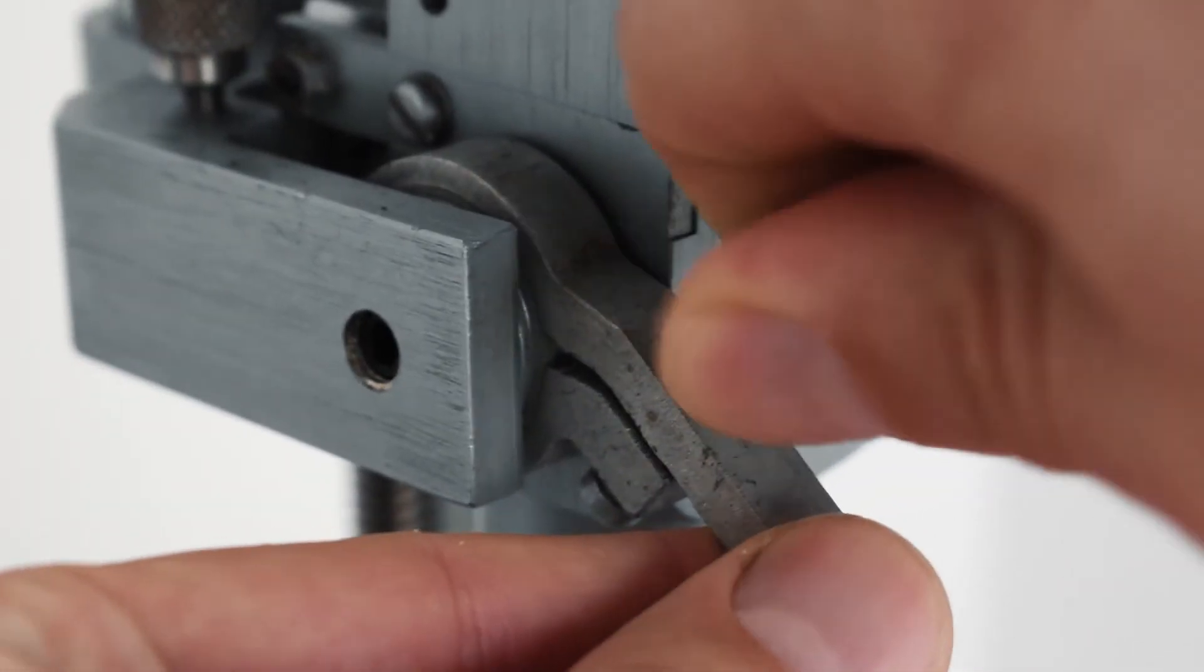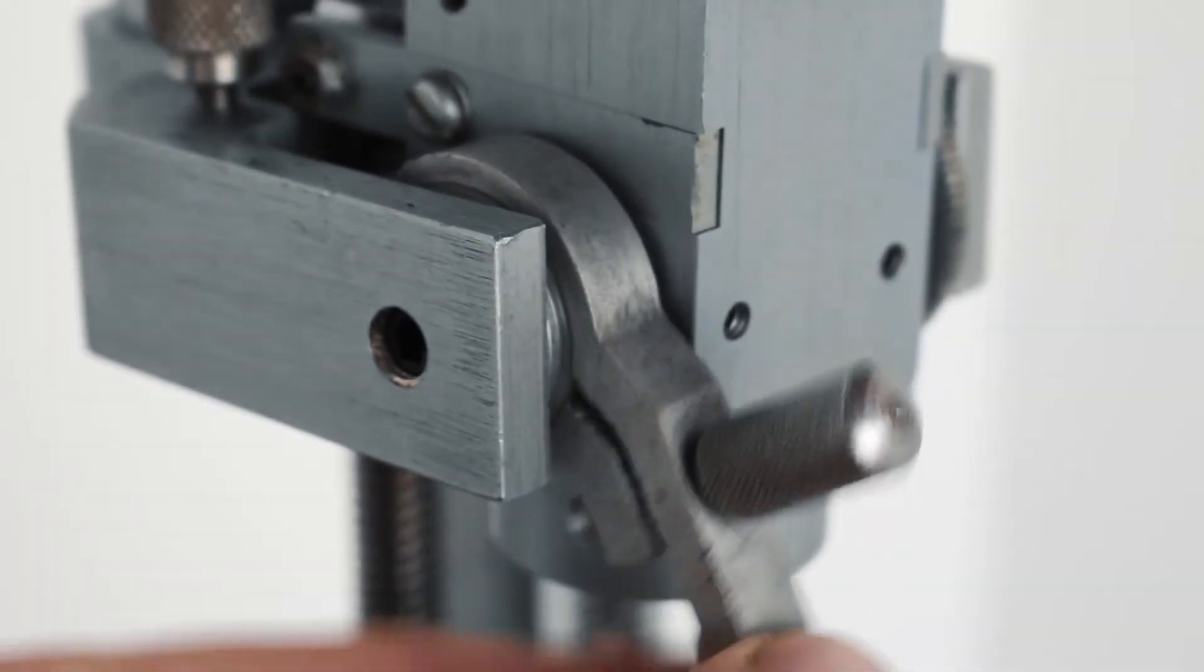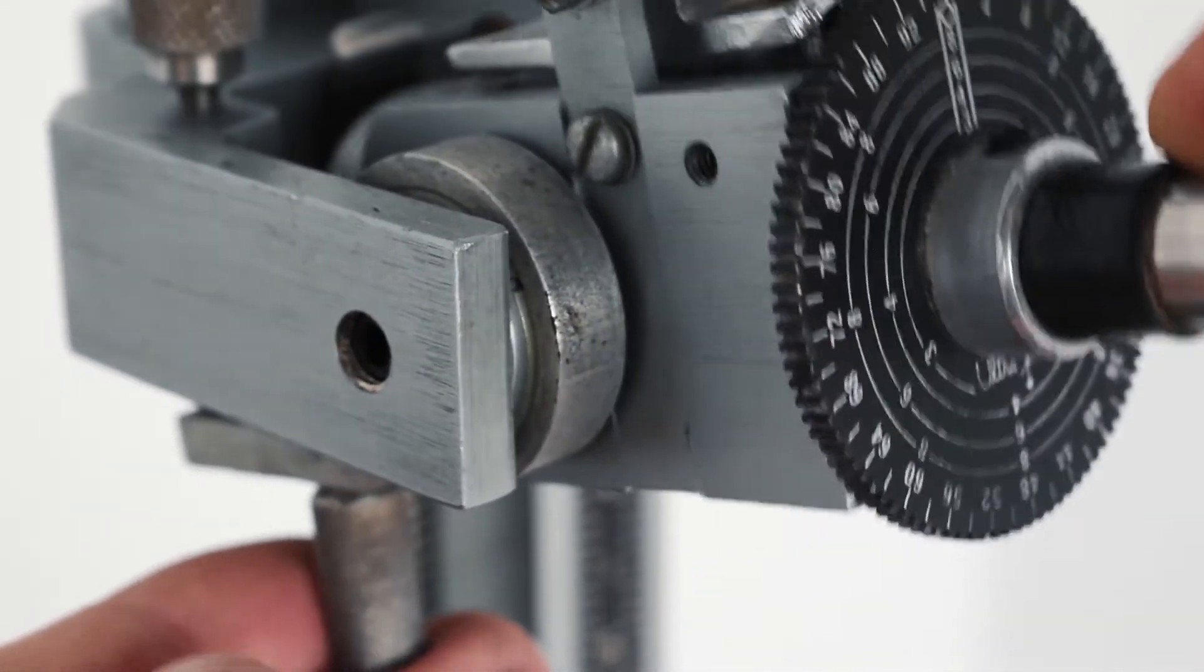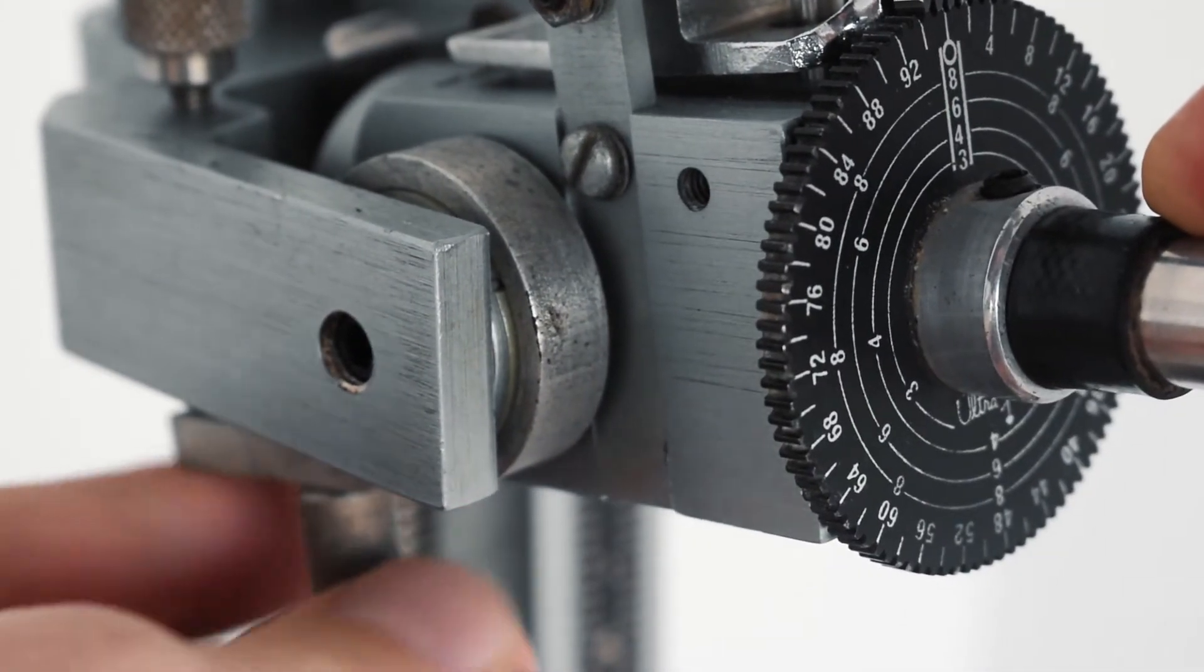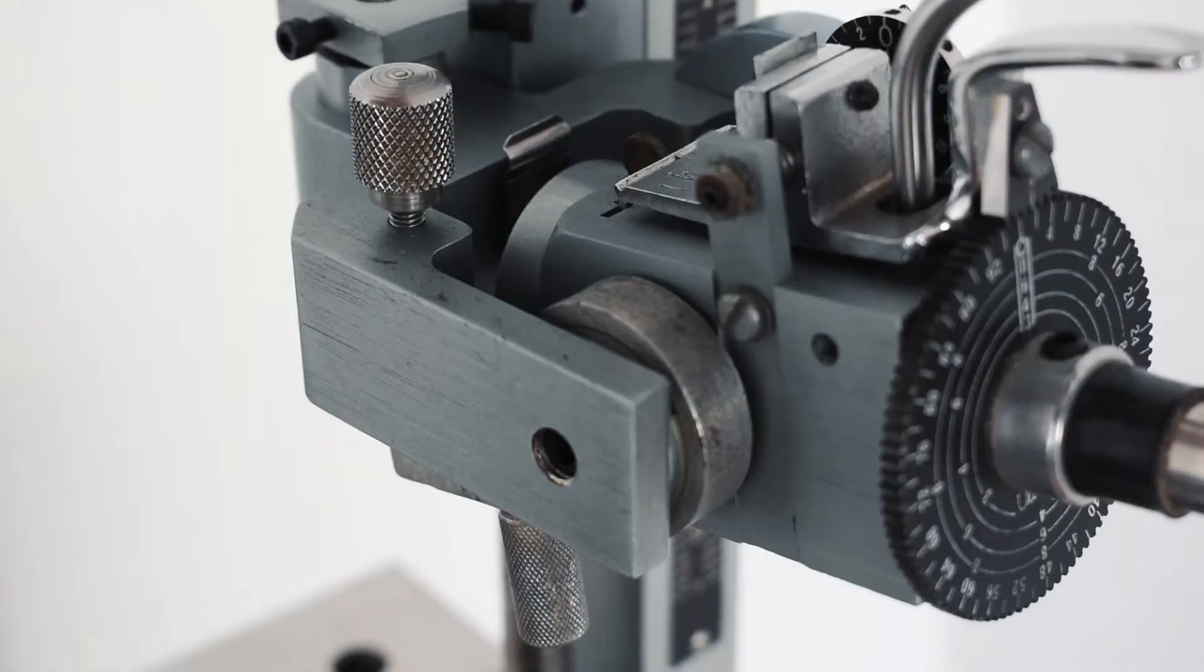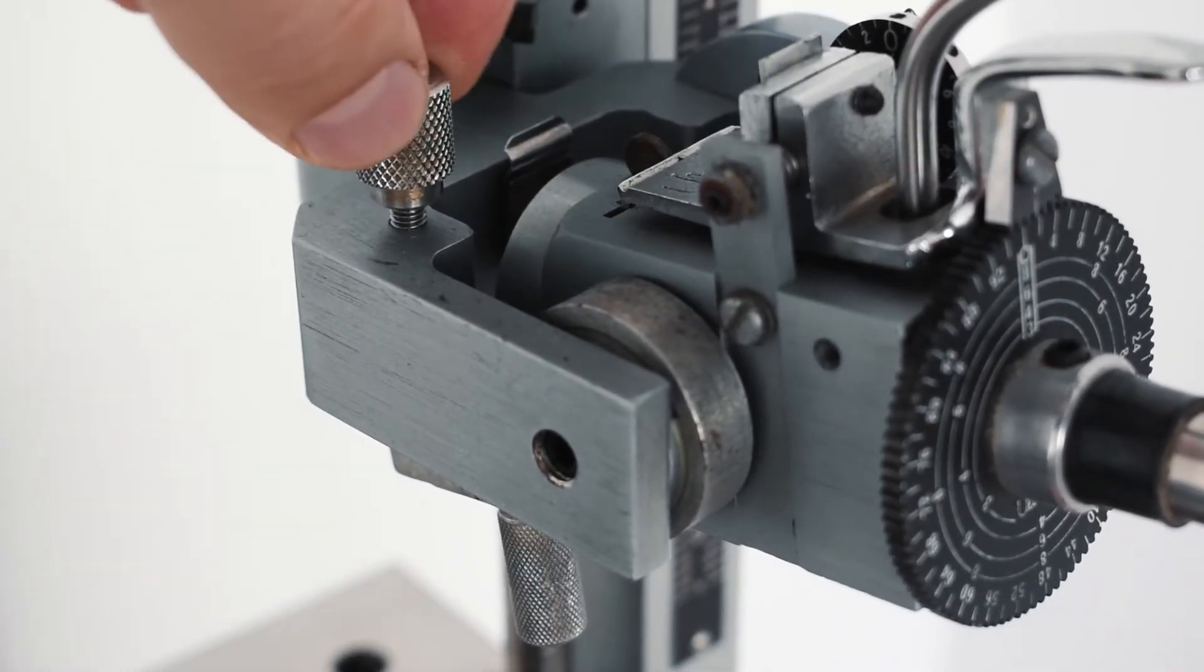To adjust your cutting angle you loosen the mast lock on the back and rotate it until it hits the hard stop. You then set your arm to your cutting angle and tighten the screw in the back to lock it. Once your arm is locked you can then use the fine adjustment screw on top to dial in the exact angle you need.